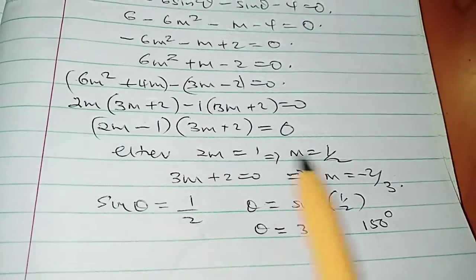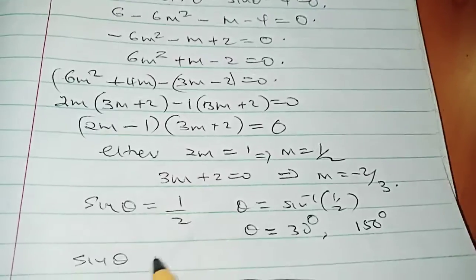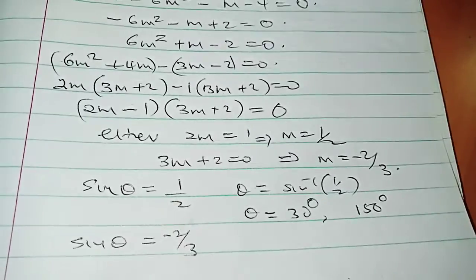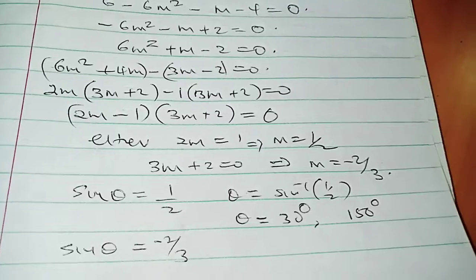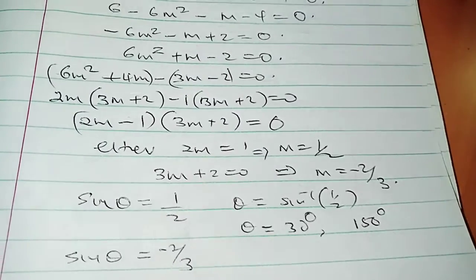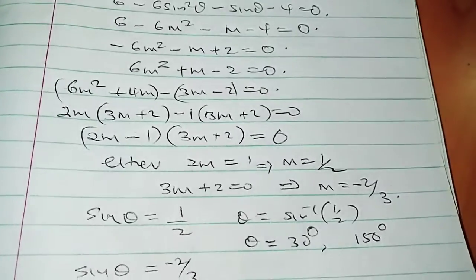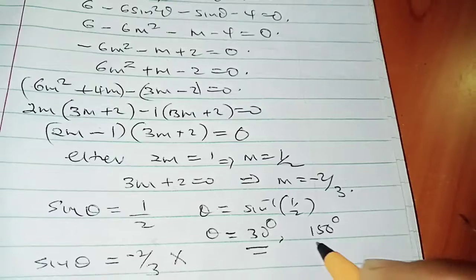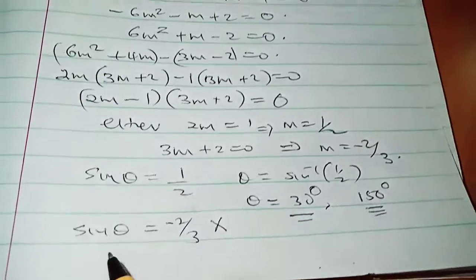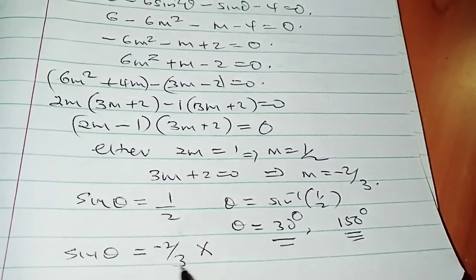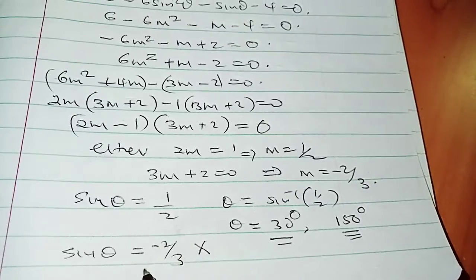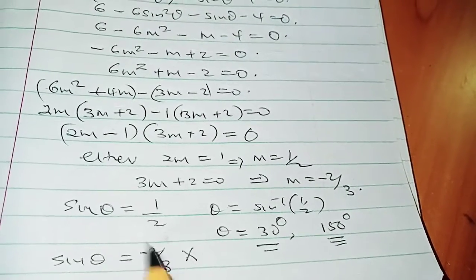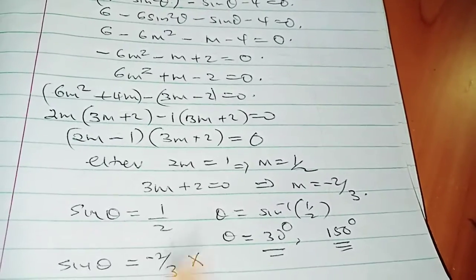So we go to the second part here, which says that sinθ equals to -2/3. But unfortunately, sin is positive in the first and second quadrant. And so this one seems to be in the third quadrant and the fourth quadrant, respectively. So what we are going to do is to disregard this as per this particular range here. So the only two angles you can have are 30 degrees and 150 degrees.